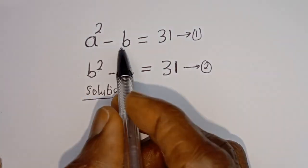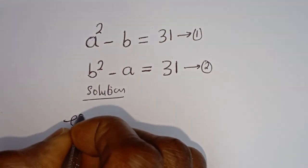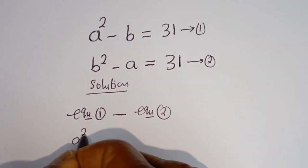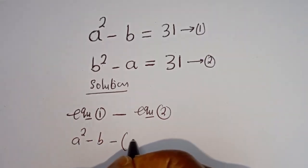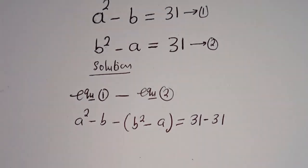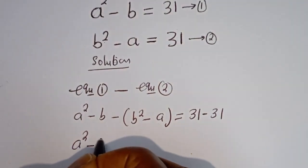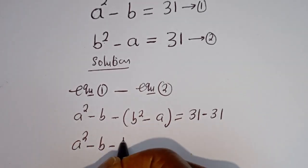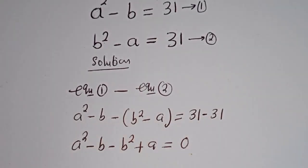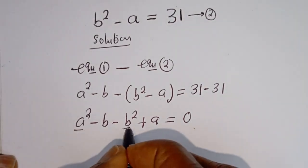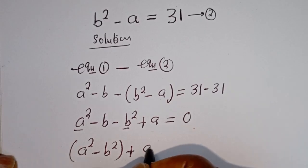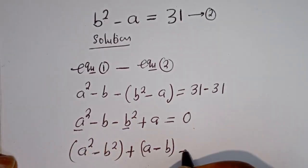We can now subtract equation 1 from equation 2. That is a squared minus b minus (b squared minus a) is equal to 31 minus 31. Then we have a squared minus b minus b squared plus a equals zero. Rearranging, we get a squared minus b squared plus a minus b equals zero.